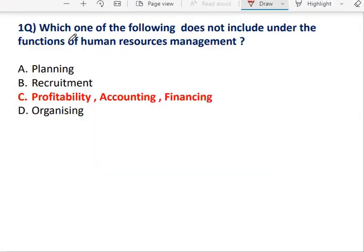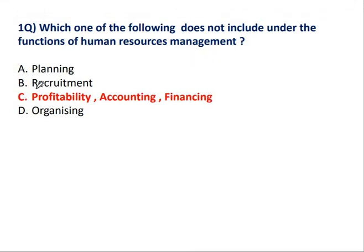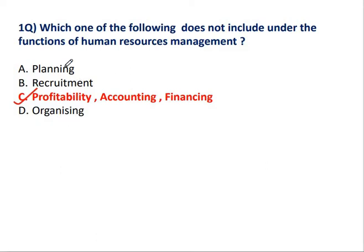Question No. 1: Which one of the following does not include the function of Human Resource Management? The correct answer is Option C. If it is written Profitability, that is also a Department of Finance. If it is written Accounting, this is also not the function of HR. Or if it is written Financing, so Profitability, Accounting, Financing are all Departments or Functions of Finance. But Planning, Recruitment, and Organizing are all functions of Human Resource Management.